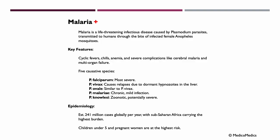Malaria is a life-threatening infectious disease caused by plasmodium parasites. They are transmitted to humans through the bite of infected Anopheles mosquitoes. Clinically, malaria is characterized by cyclic fevers and chills, reflecting the parasite's life cycle in our red blood cells. Patients often develop anemia due to the destruction of these red blood cells. In severe cases, malaria can lead to complications such as cerebral malaria, which affects the brain, and multi-organ failure.